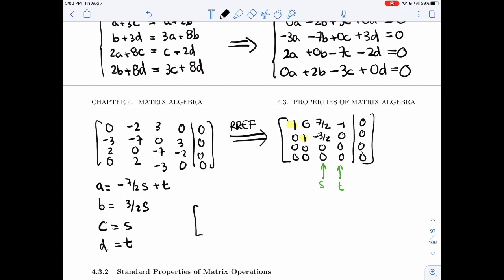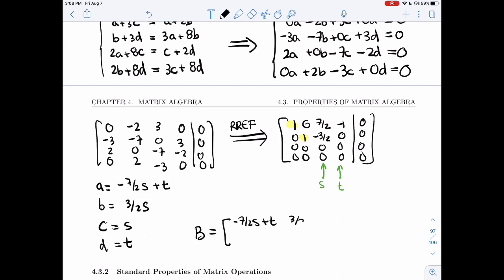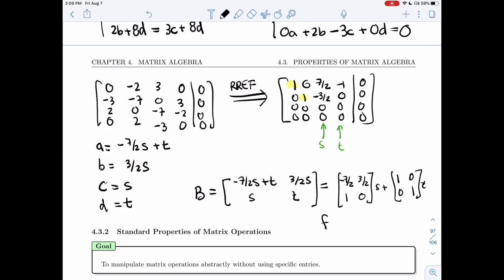And so when I write what B should be equal to, the big B, the matrix, I'll get A is minus 7 half S plus T, 3 half S, I'll have S and T for any S and T in R, but let me write it in a more interesting way. I'll do the same thing we used to do with vectors. I'm going to pull out the two constants. I have two parameters. So I have the identity here times T plus this messier matrix times S. That's the solution for all S and T in R.